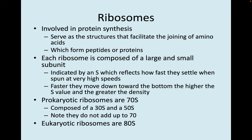Ribosomes are involved in protein synthesis, serving as structures that facilitate the joining of amino acids to form peptides or proteins. Each ribosome is made up of a large and a small subunit, indicated by an S value, which reflects how fast they settle when spun at very high speeds in a centrifuge. The faster they move down, the higher the S value and the greater their density. Prokaryotic ribosomes are usually 70S, composed of a 30S and a 50S subunit — and they don't have to add up to 70.